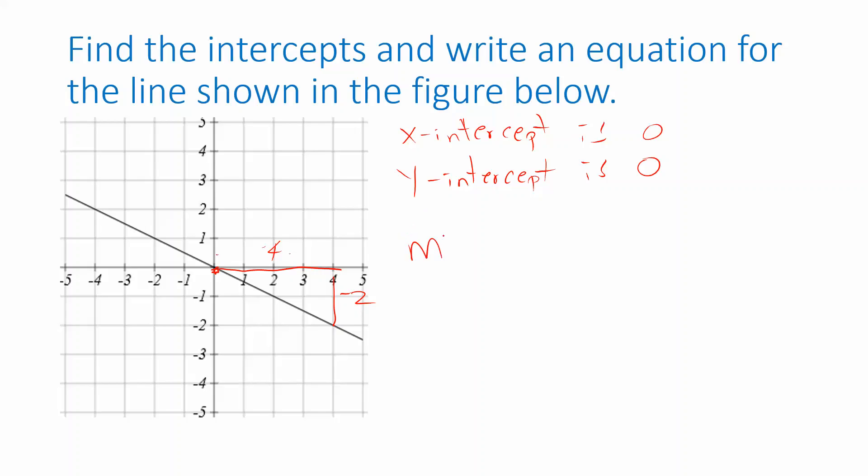So what do we get for the slope? It's rise over run. Negative 2 divided by 4. So that simplifies to negative 1 half. Or you could write it as a decimal if you want, negative 0.5. I'm going to leave it as a fraction.